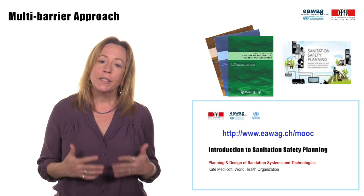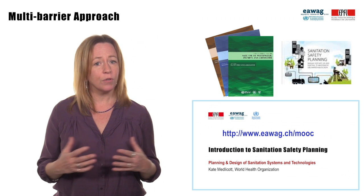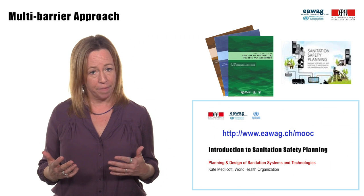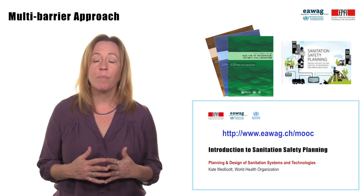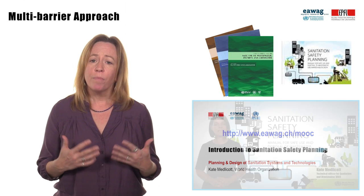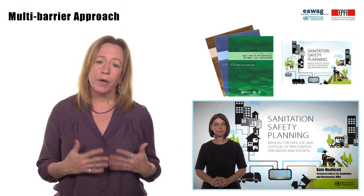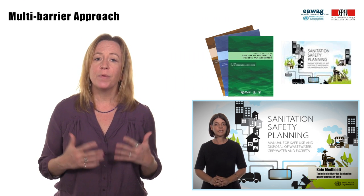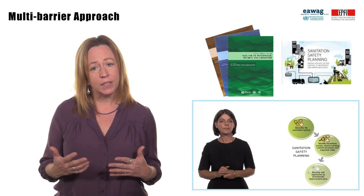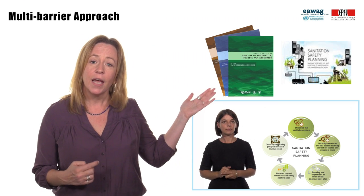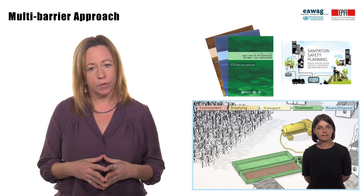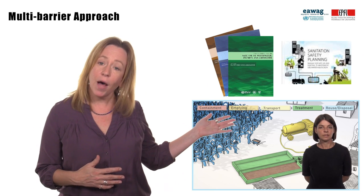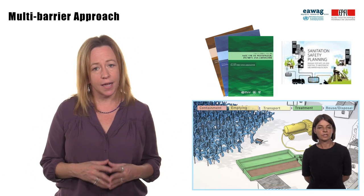When considering risk of infection, all potential exposure groups should be accounted for, which can be broadly categorized as workers and their families, surrounding communities, and product consumers. For more information on a multibarrier risk-based approach to ensure adequate protection of public health, I recommend the WHO guidelines for safe use of wastewater, excreta, and graywater in agriculture and aquaculture, the Sanitation Safety Planning Manual, and the Sanitation Safety Planning Module in the Sandec MOOC on sanitation systems.